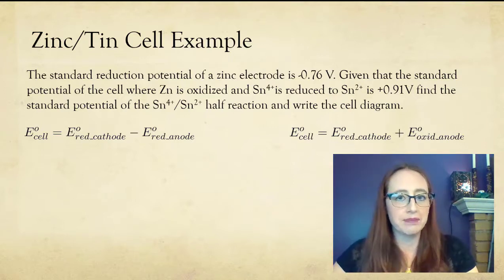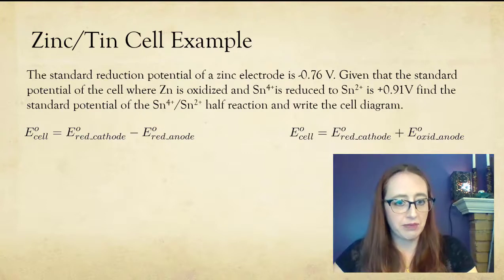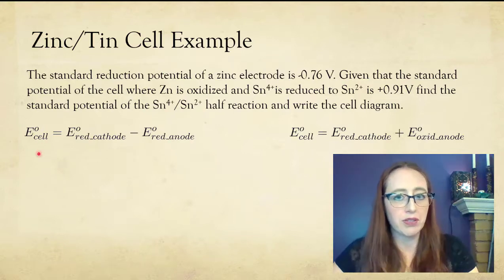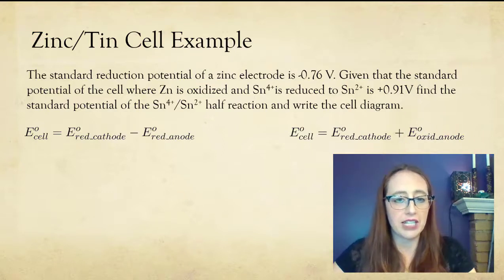Let's walk through the problem. As usual, I like thinking about this in two different methods so that you can take your pick. If you've been using the equation where you use the reduction values for both, let's go ahead and follow along over here. And if you like using the method where you change the sign of the oxidation reaction and then add them together, then you're going to be following along over here.